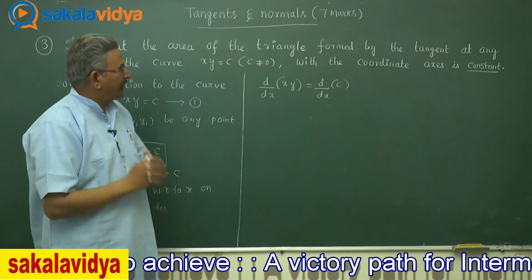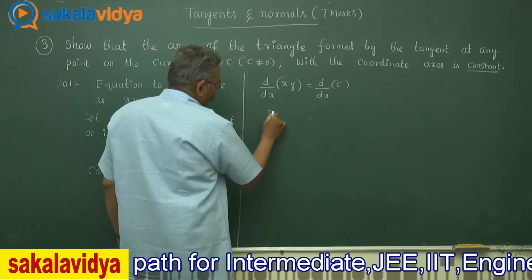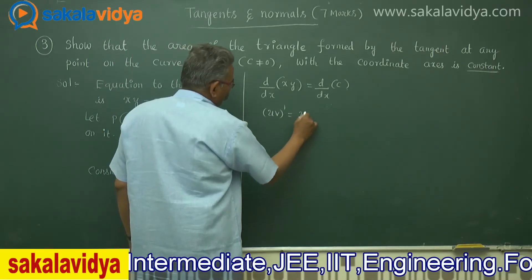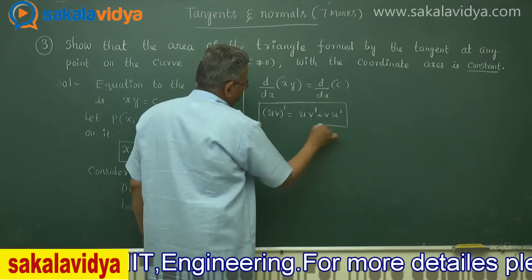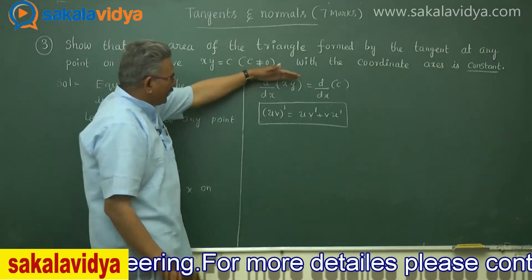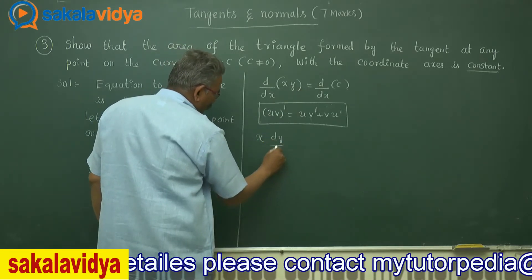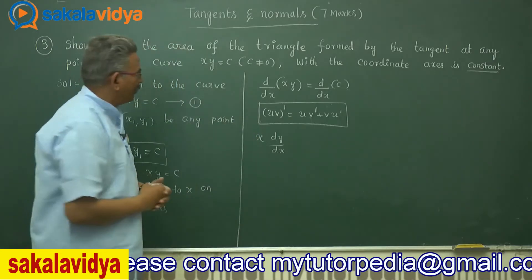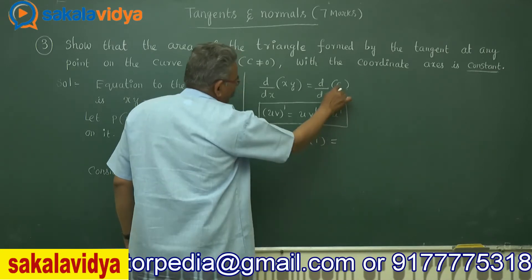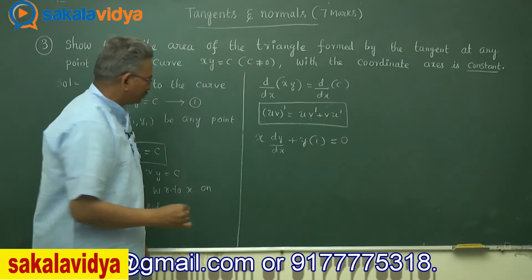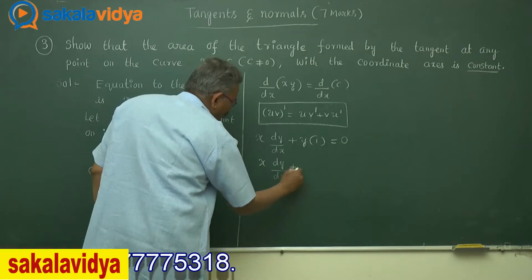How can we differentiate XY? Yes, using the UV rule: d/dx(UV) equals U·V' plus V·U'. So XY differentiation gives X into dy/dx plus Y multiplied by differentiation of X which is 1, whereas constant differentiation is 0. So we get X·dy/dx plus Y equals 0.